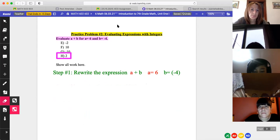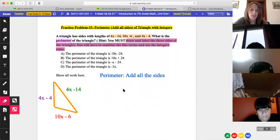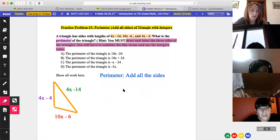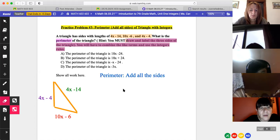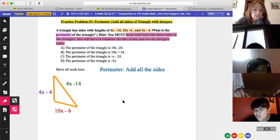All right, let's try to come in. Caleb's been having internet struggles. Okay, problem 3. Ms. Burgos or Mr. R, who wants to read it and have someone do it? I'll read it and I'll pick someone. Okay. Practice problem number 3, perimeter at all sides of triangle with integers. A triangle has sides with lengths of 4x minus 14, 10x minus 6, and 4x minus 4. What is the perimeter of the triangle? Hence, you must draw and label the three sides of the triangle. You will have to combine the terms and use the integer rules. And let us have to do Adam.